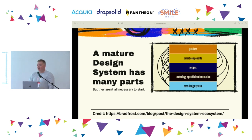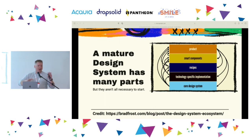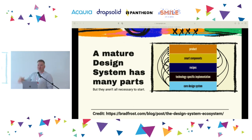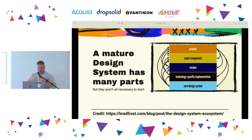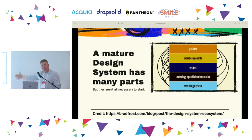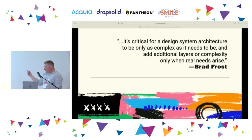Brad Frost, one of the people who came up with atomic design, has a blog post that's a master class in design systems complete with Figma links and diagrams. He lays out how a design system continues to evolve: from your core design system, you have technology-specific implementation recipes — components — that are then assembled into products. Critically, the product feeds back into the system. It's not one-way; it's a living ecosystem.